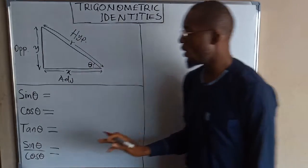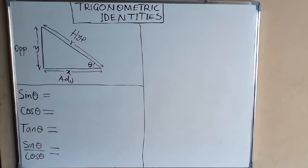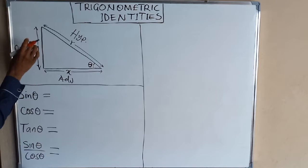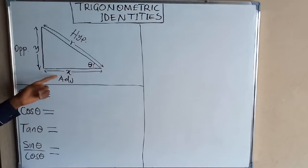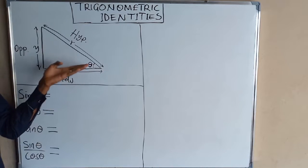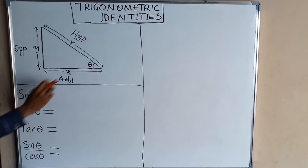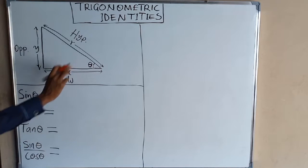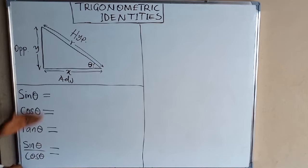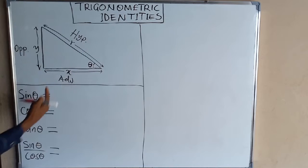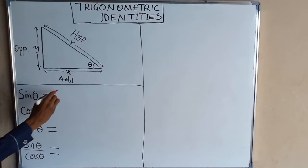I have here a right angle triangle with the hypotenuse, which is always the longest side, then the opposite side, which is opposite our angle theta, and the adjacent side, which is adjacent to our angle theta. Sine of this angle — sine theta — is always opposite divided by the hypotenuse, and opposite is y, so I have y divided by r.